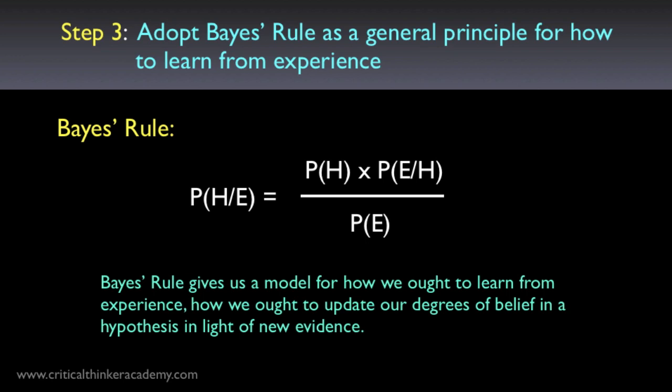For frequency theorists, Bayes' rule is just another useful formulation of conditional probability, and its use is restricted to cases where relative frequencies can be defined. For subjectivists, it's fundamental to their whole approach to rationality and can be used in a much wider range of applications. There's also a whole field of philosophical work that falls under the label of Bayesian epistemology, which applies Bayesian principles to various problems in the philosophy of knowledge, philosophy of science, decision theory, and learning theory. Regardless of what you think of it, this approach to probability has had a huge impact on philosophy and science.